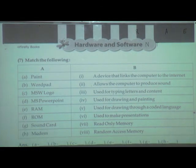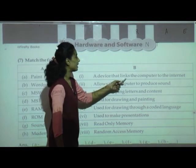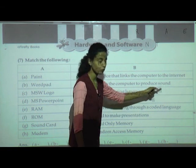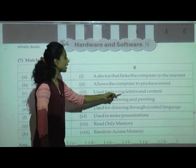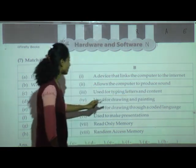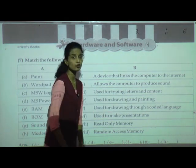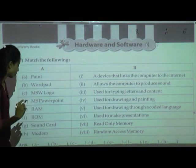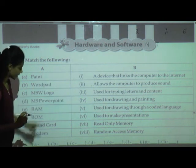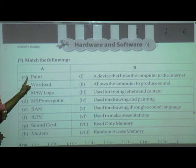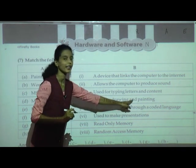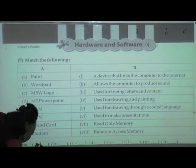First one is paint. What is the working of paint? What is the use of paint? Use for drawing and paint — it is the fourth one. The answer is already given A, and the answer of A is: used for drawing and paint — fourth number.